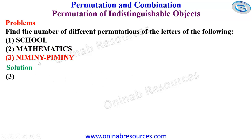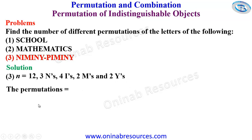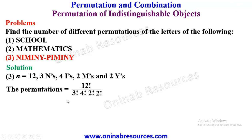We go to problem 3: Nimini-pimini. We count the letters: 1, 2, 3, 4, 5, 6, 7, 8, 9, 10, 11, 12 — so our n is equal to 12. We have 3 N's, 4 I's, 2 M's, 2 Y's, and only 1 P. So the number of permutations of the letters of the word nimini-pimini will be 12 factorial over 3 factorial times 4 factorial times 2 factorial times 2 factorial. Inputting this into our calculator, we get 831,600 permutations.